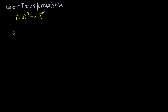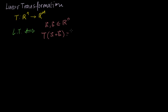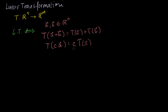Something is a linear transformation if and only if the following is true. Say that we have two vectors, vector a and vector b, both members of Rn — both in our domain. Then this is a linear transformation if and only if: first, the transformation of the sum of the vectors equals the transformation of each vector summed separately. Second, if I take the transformation of any scaled version of a vector — c times vector a — that should equal c times the transformation of a.